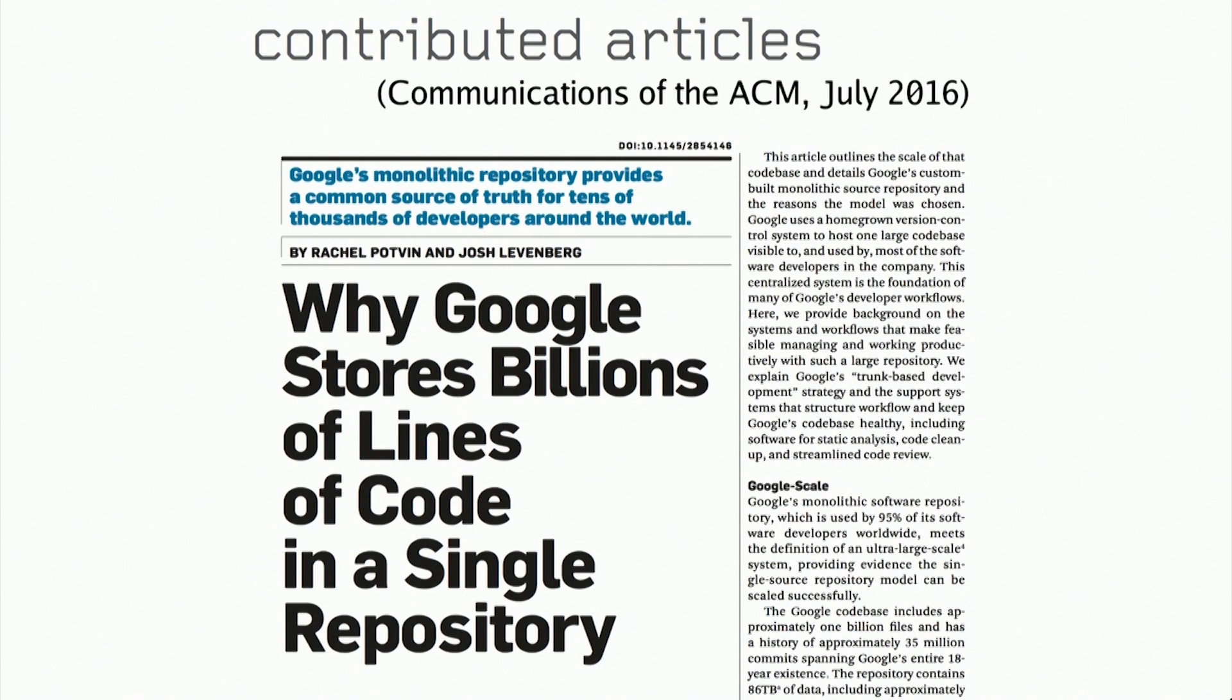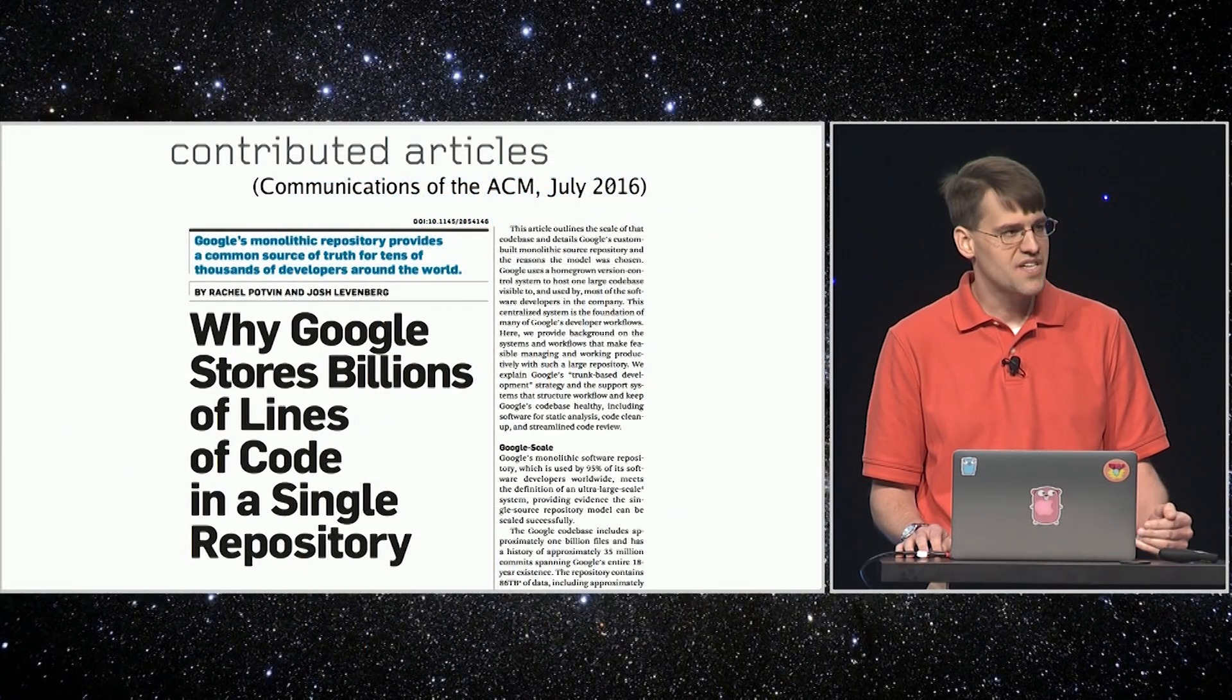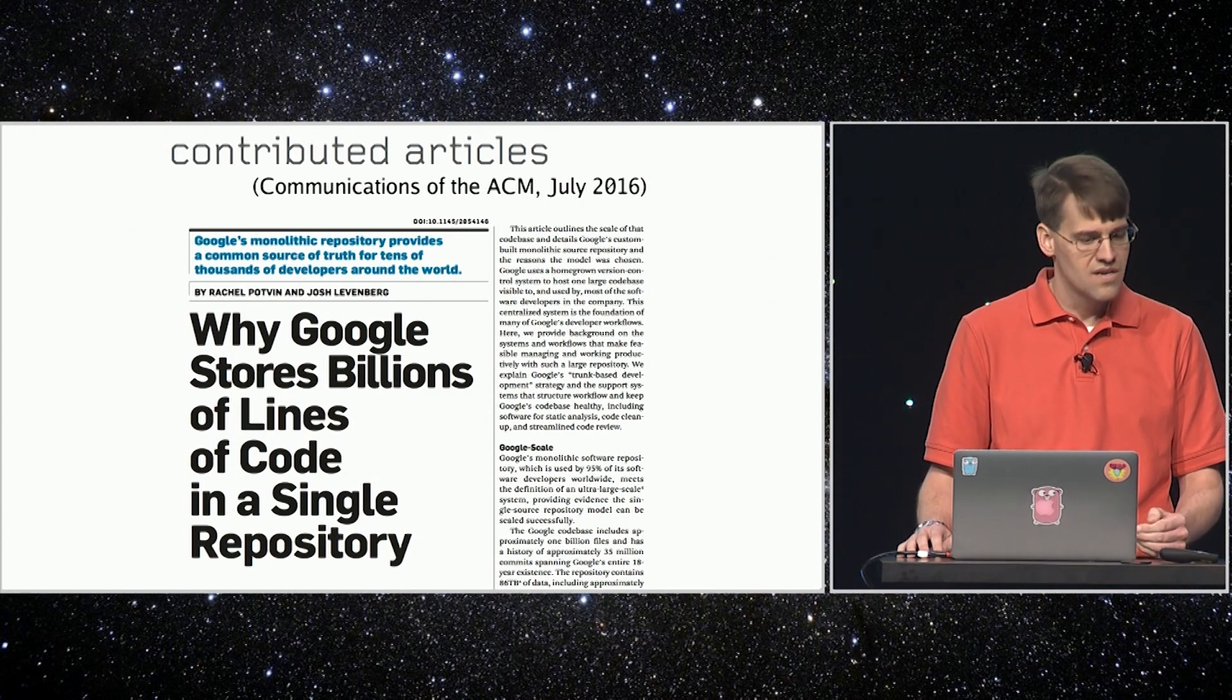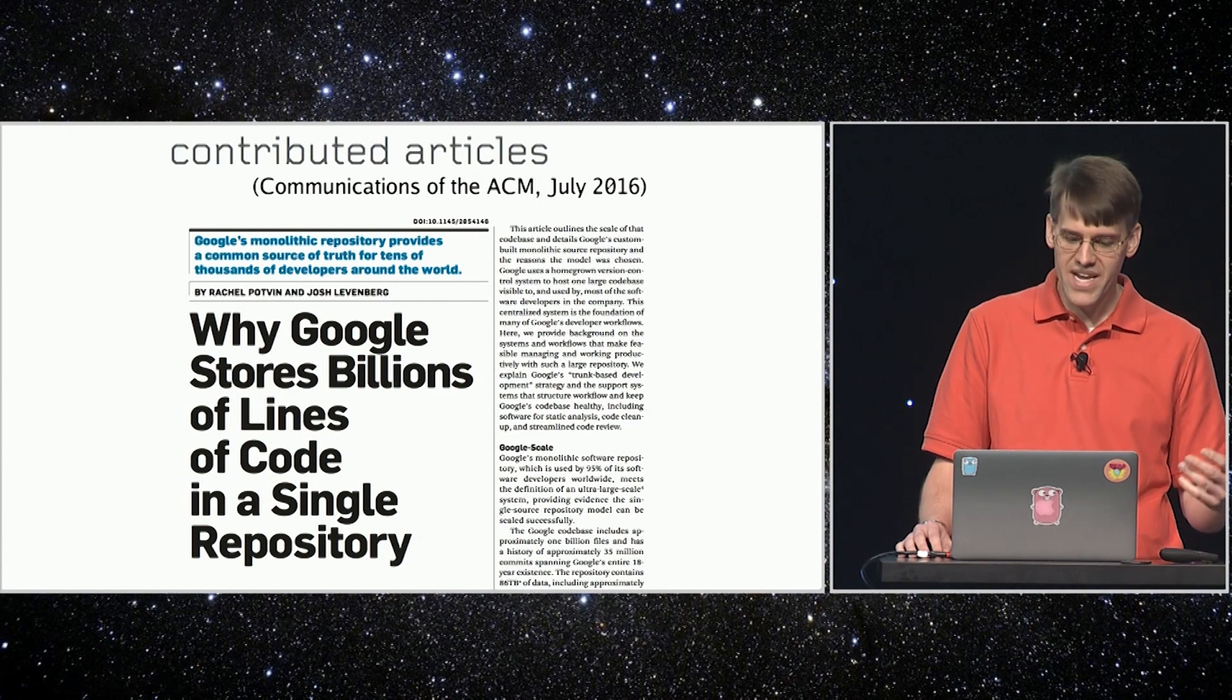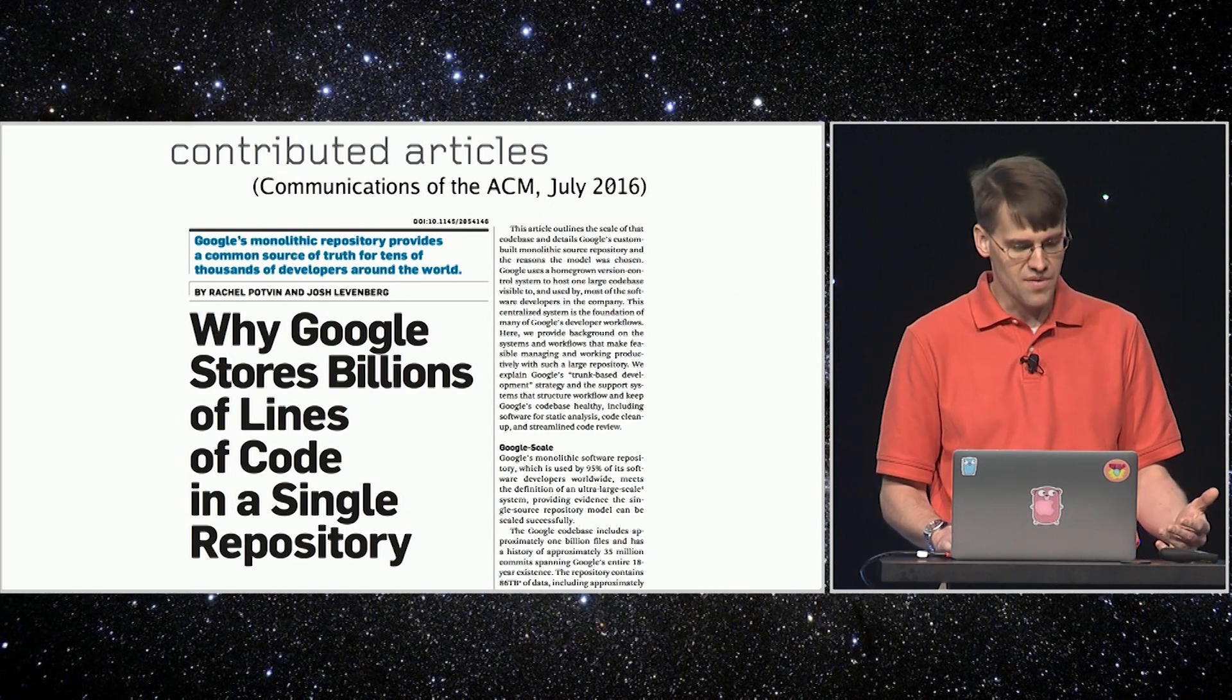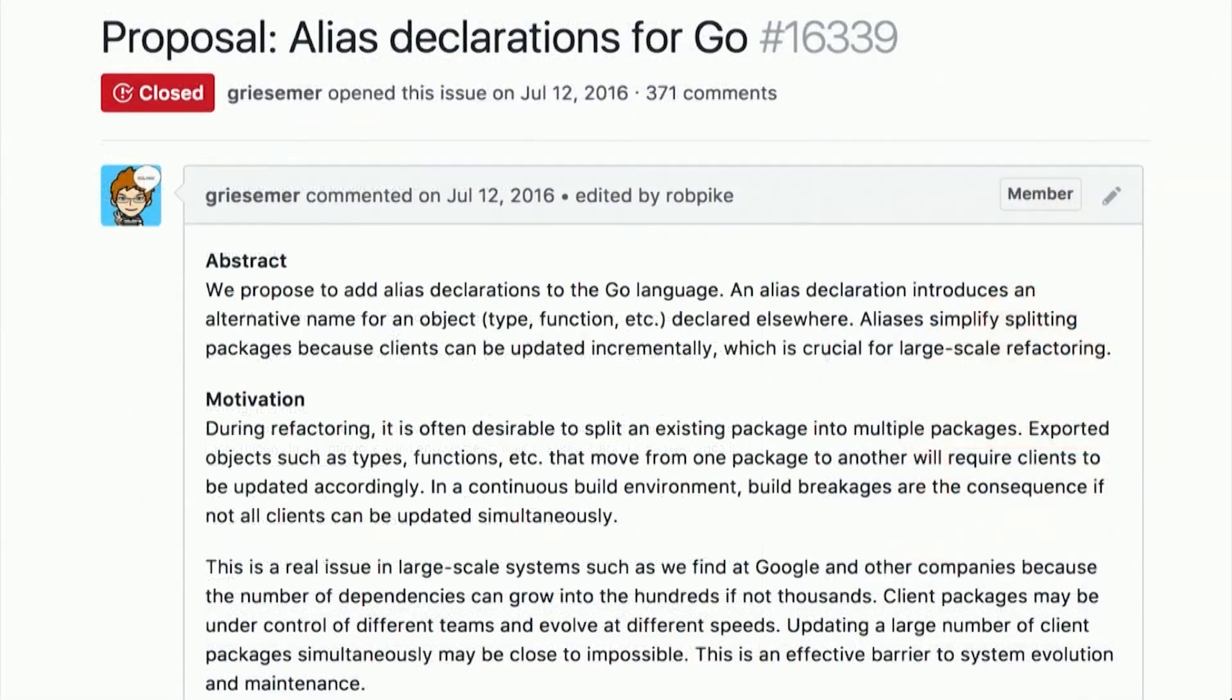Of course, one of Go's goals is to scale well to large code bases, and as the amount of Go code at Google grew, it became clear both that we needed some kind of forwarding mechanism and also that other projects and companies would run into this problem as their Go code bases grew. So in March 2016, I started talking with Robert and Rob about how Go might handle gradual code base updates, and we arrived at alias declarations, which are exactly the needed forwarding mechanism.